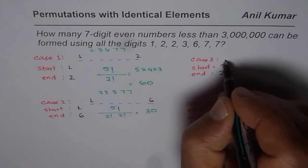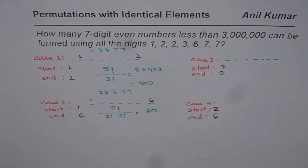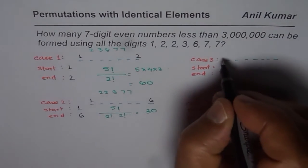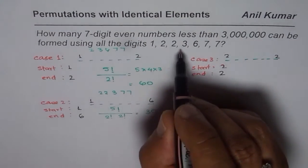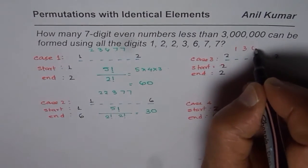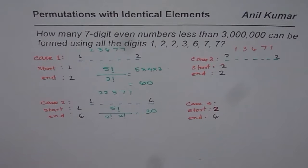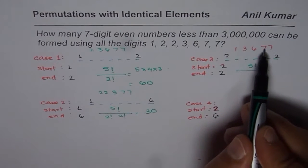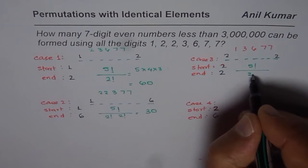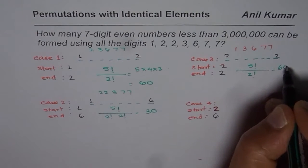In case 3, if we start with 2 and end with 2, in that case, the list of numbers which we have is 1, 3, 6, 7, 7. These are again 5 numbers. So 5 factorial divided by how many repeats? 2 sevens, so 2 factorial. 5 factorial by 2 factorial will be 60.